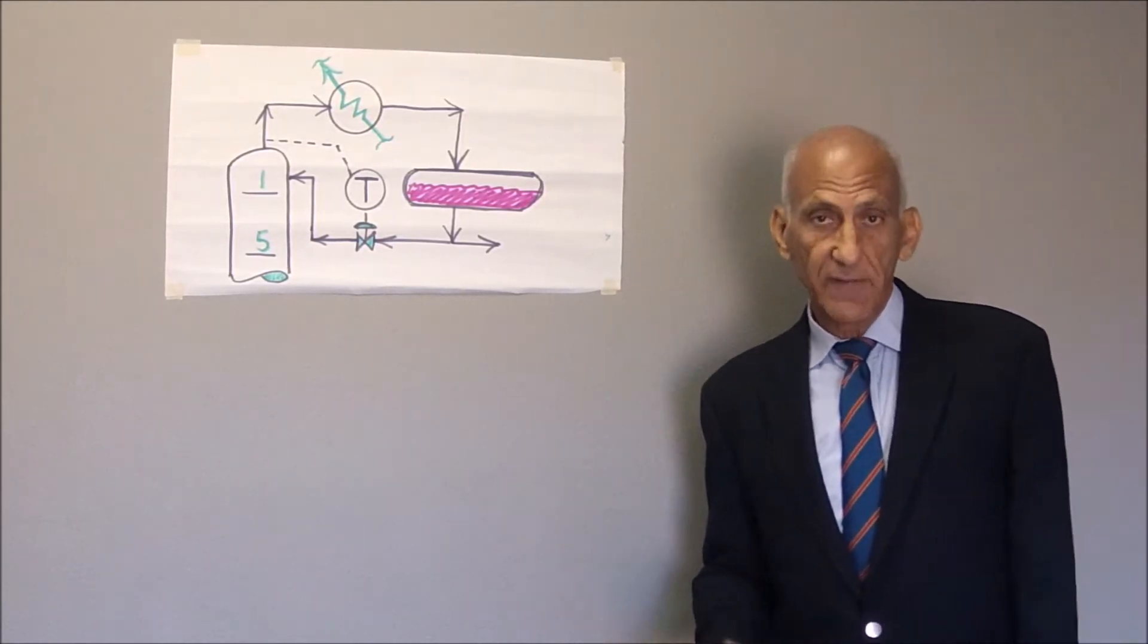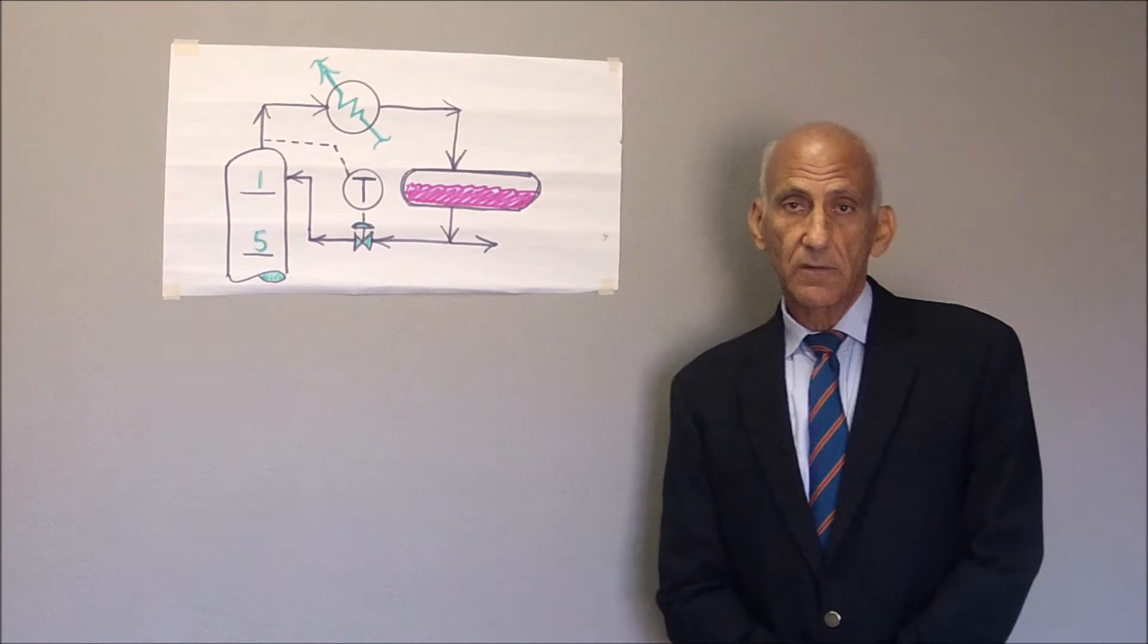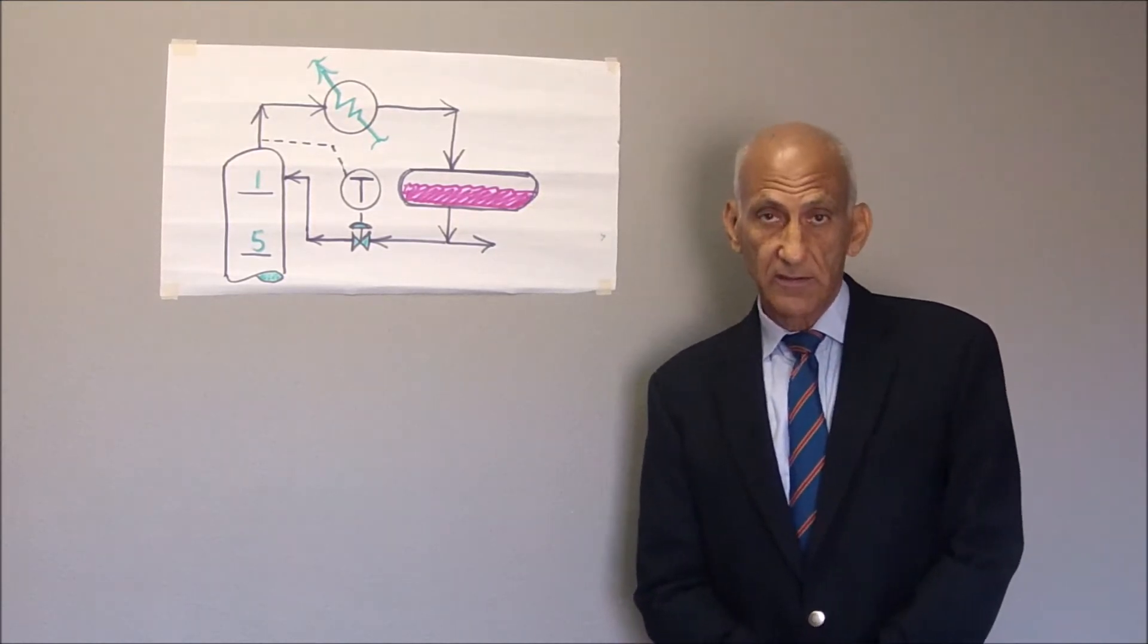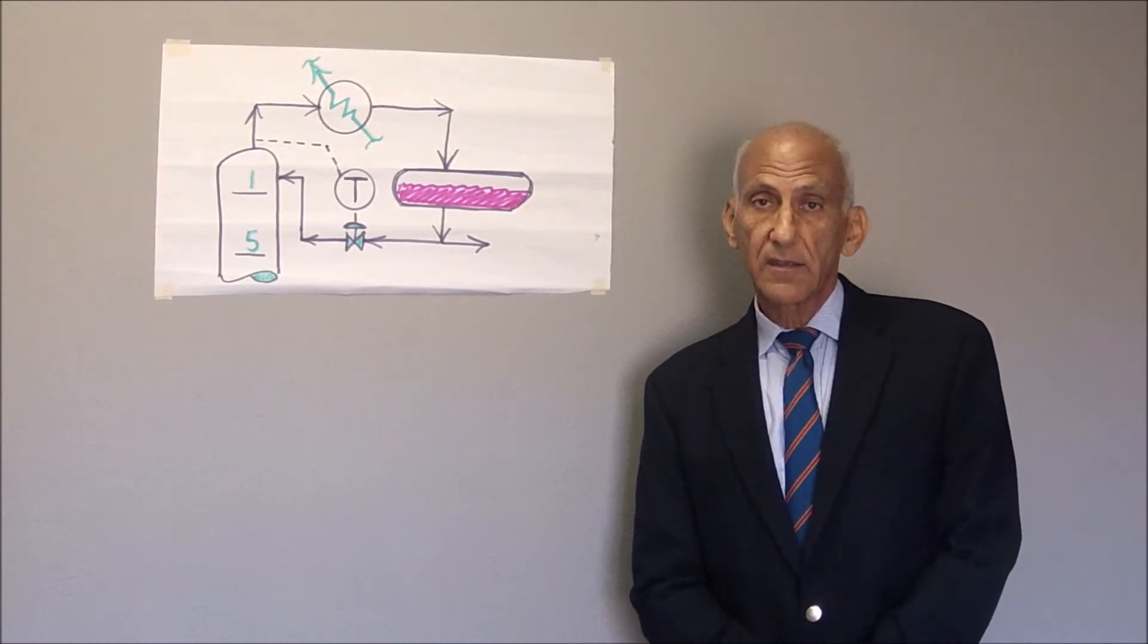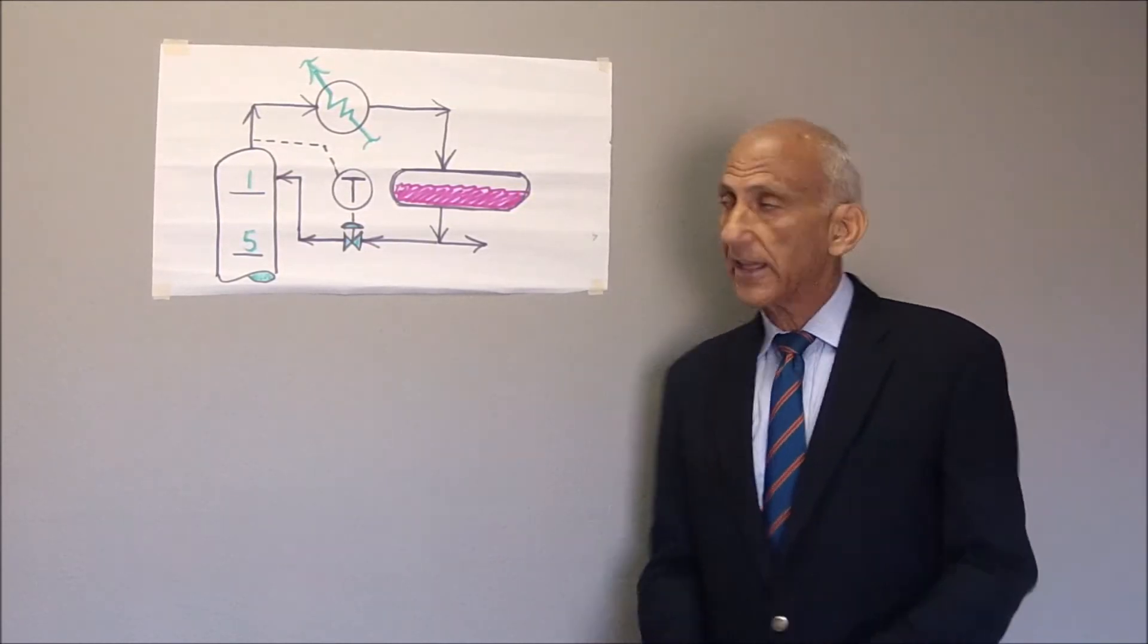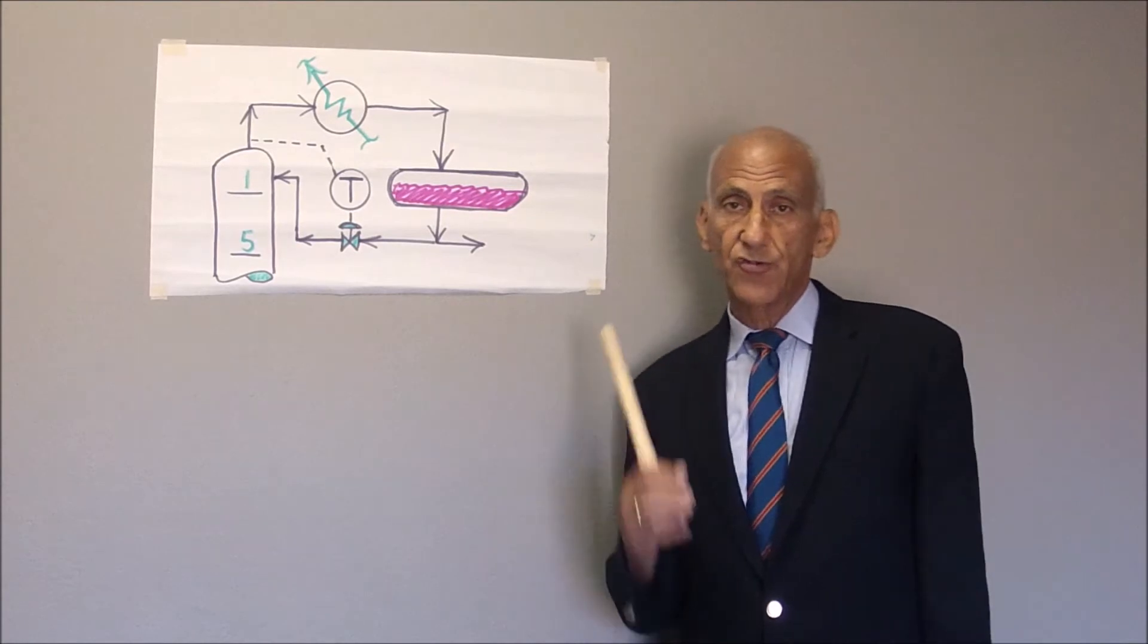After all, where does the reflux come from? Well, it comes from the reboiler. Therefore, as you increase the reflux rate in order to keep the liquid level from diminishing in the reflux drum, one must increase the reboiler duty.